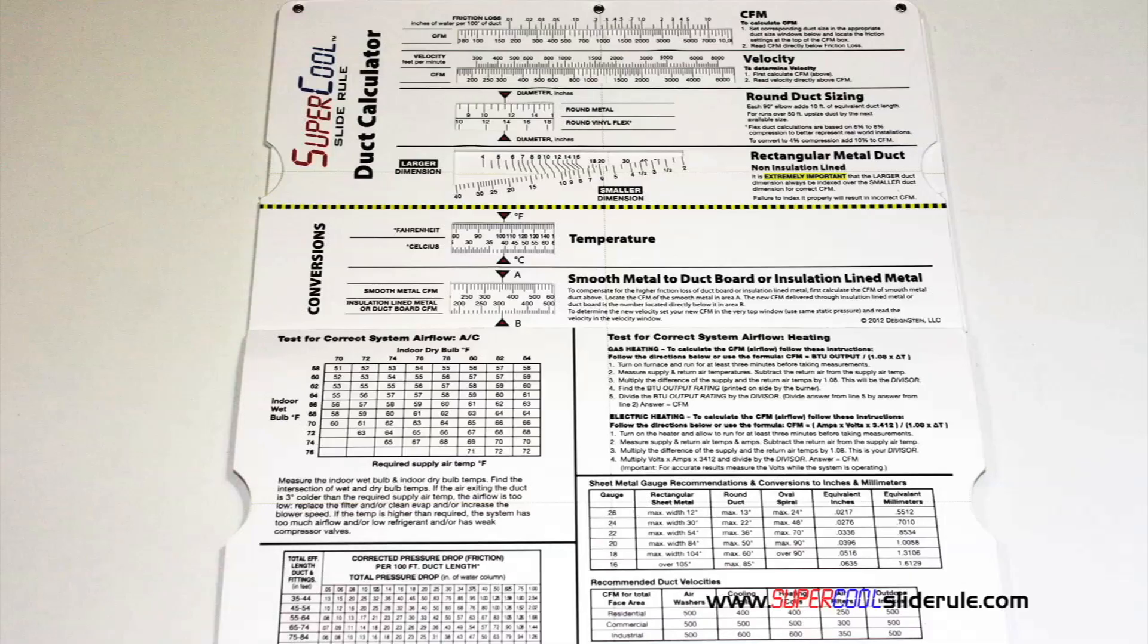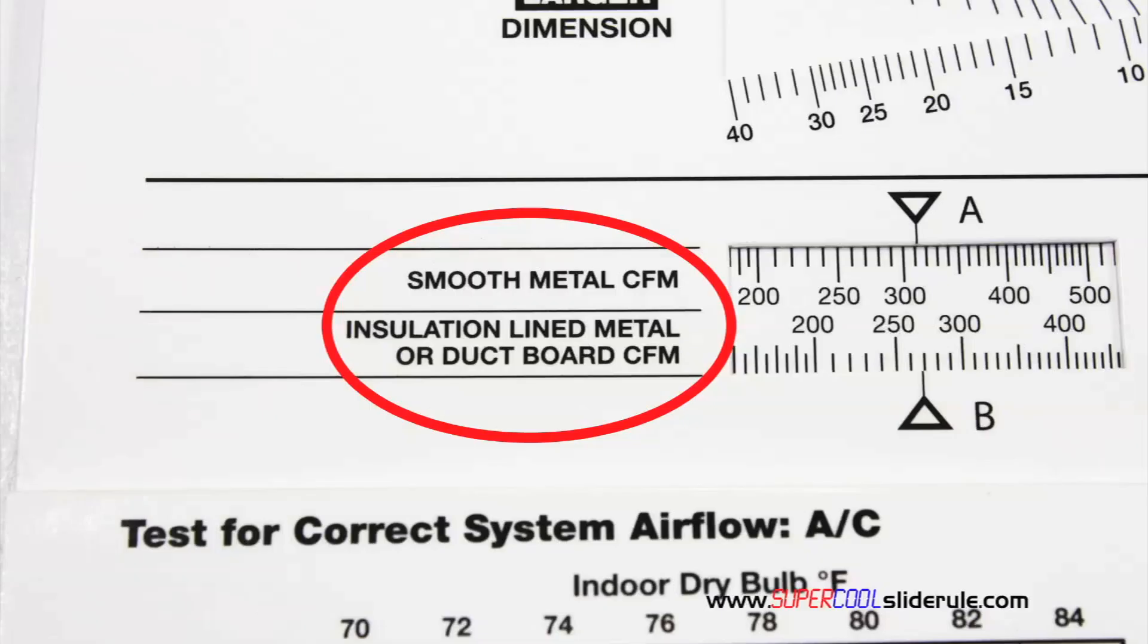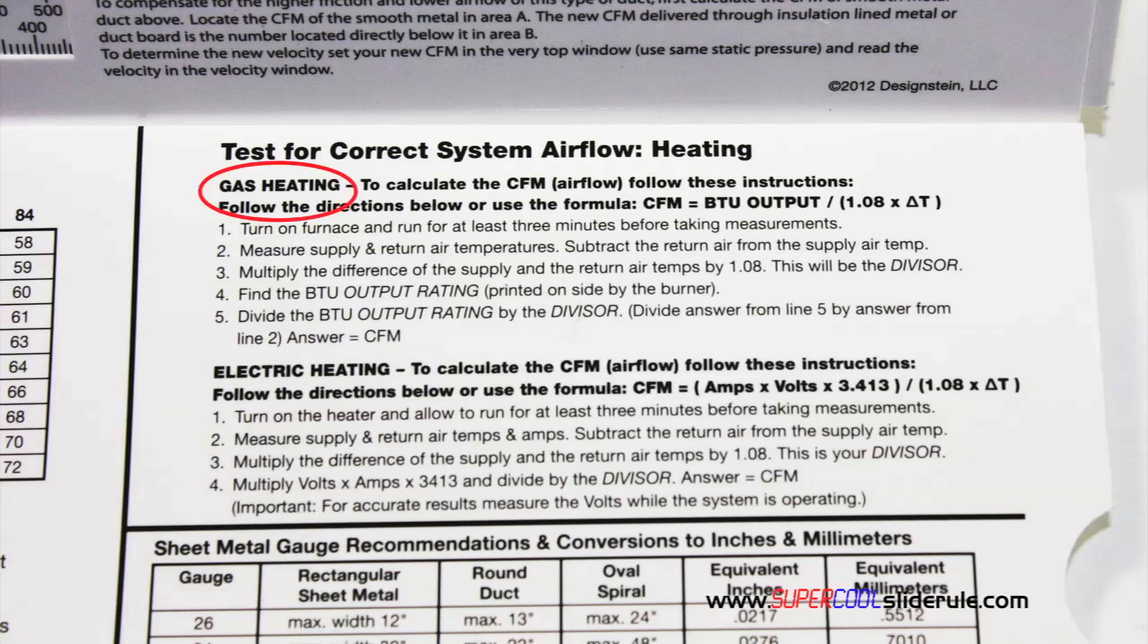Inside, it is packed with even more information. It performs sizing of both metal and flexible duct. It has the only direct reading conversion from smooth metal to insulation lined metal we've ever seen. The majority of technicians have never been taught that if the insulation is on the inside of the ductwork, you cannot size it with a regular duct calculator.